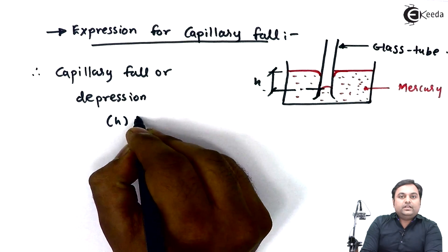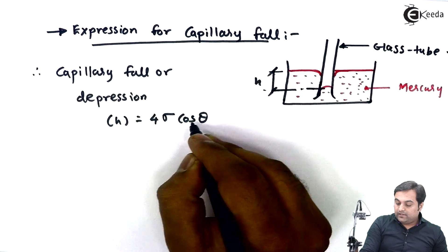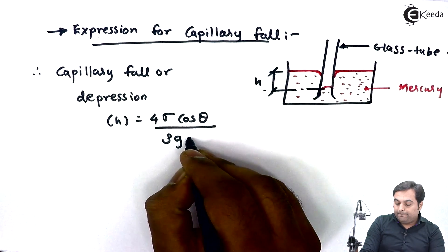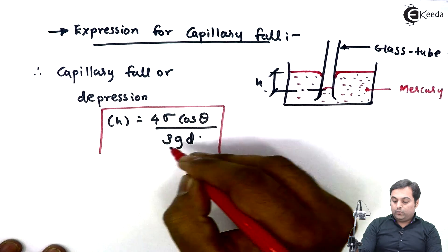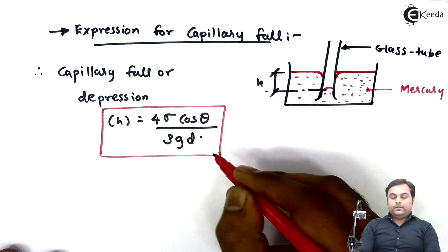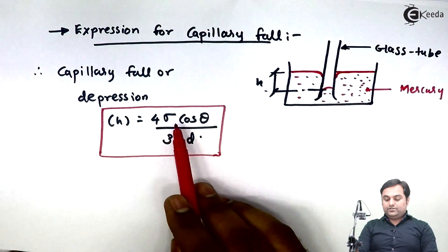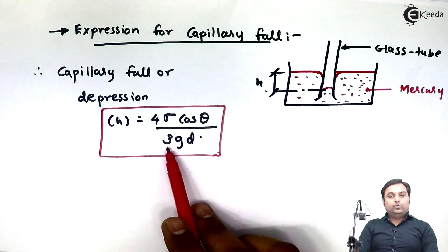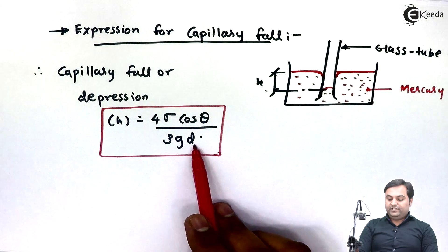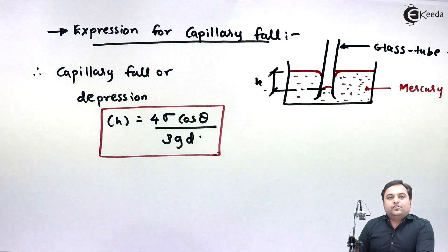Capillary fall or depression is given by H = 4σcosθ/(ρgD). This is the formula for capillary fall, where the only addition compared to capillary rise is the cosθ term. Here sigma is surface tension, rho is the density of mercury, g is acceleration due to gravity, and D is the diameter of the glass tube. In this video we have seen the meaning of capillarity and the expressions for capillary rise and capillary fall.